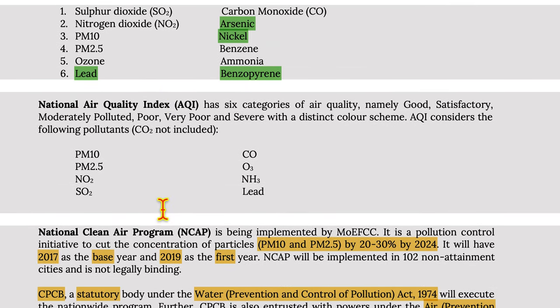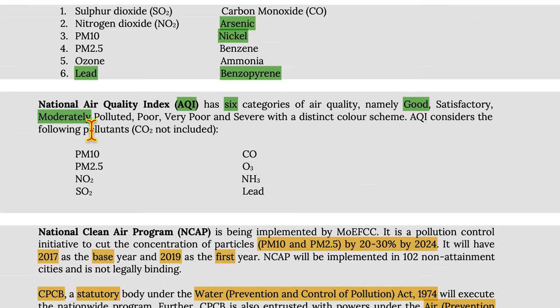Moving on to the National Air Quality Index — it has six categories of air quality: good, satisfactory, moderately polluted, poor, very poor, and severe, each with a distinct color scheme.